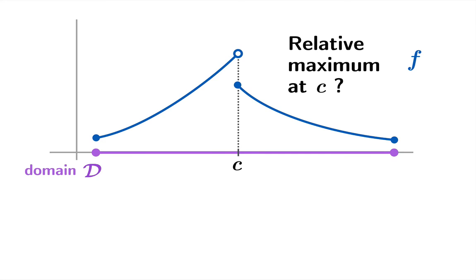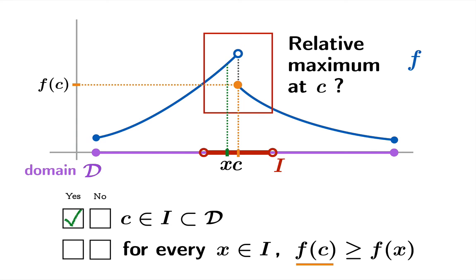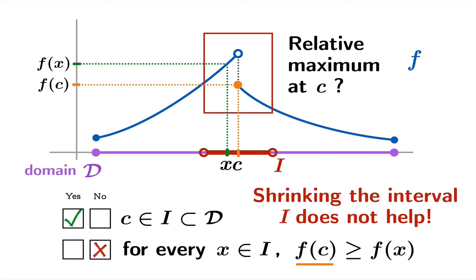Now watch what happens when we ask: is there a relative maximum at c? We look close to c and try to build a nice sampling interval. But it's false that f(c) ≥ f(x) for all nearby x, because we can always choose x nearby where f(x) is larger. Shrinking the interval doesn't help the situation.